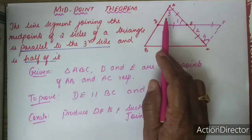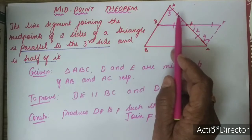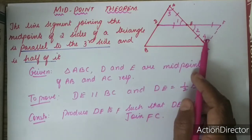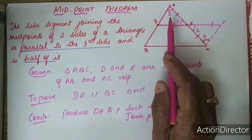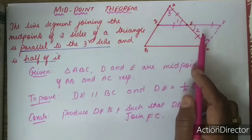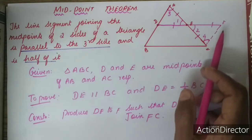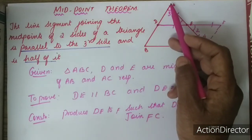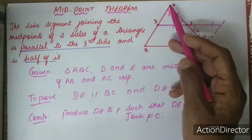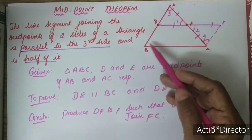So in these two triangles, this is angle-side-angle. By ASA, these two triangles are congruent. And by CPCT, CF is equal to DA. But DA is equal to BD, therefore BD is also equal to CF.